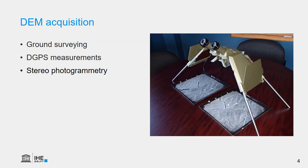Another traditional way is to use stereophotogrammetry. In the picture you see a stereoscope and a stereo pair of aerial photographs. They have an overlap, and in the overlapping area we can see through this device in 3D. There are special rulers that we can use to measure the elevation of points we see on the photographs. That's also very laborious and requires good skills, and the points then need to be digitized to get a raster output.